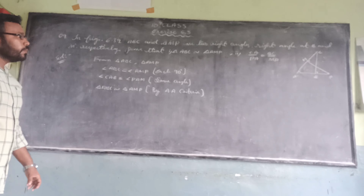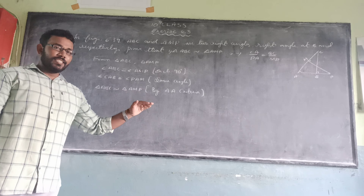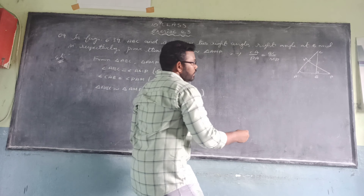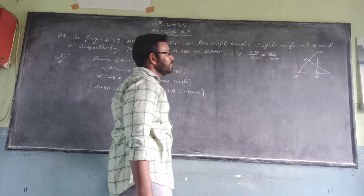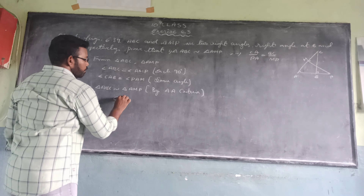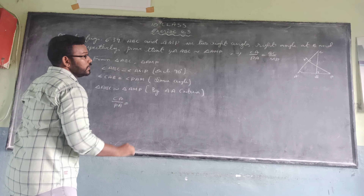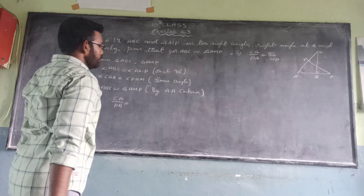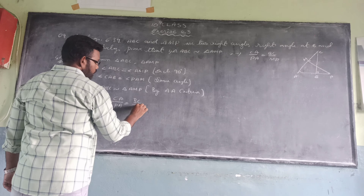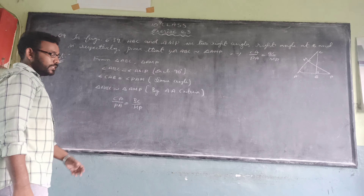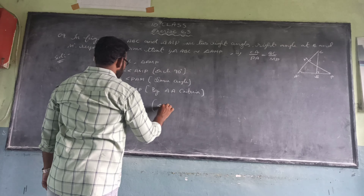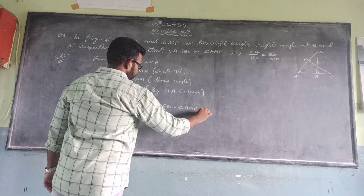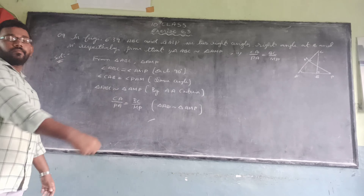When two triangles are similar, the ratios of their corresponding sides are equal. The corresponding side to CA is PA, so CA by PA equals BC by MP, since the corresponding side to BC is MP. Therefore, CA/PA = BC/MP.